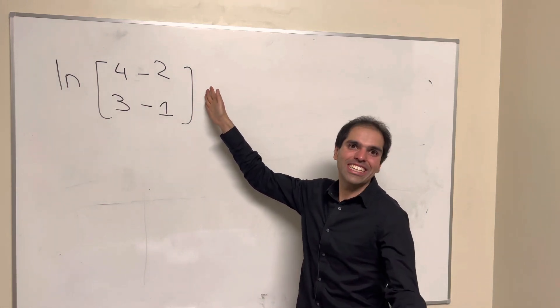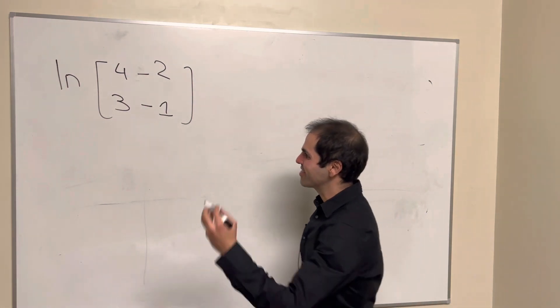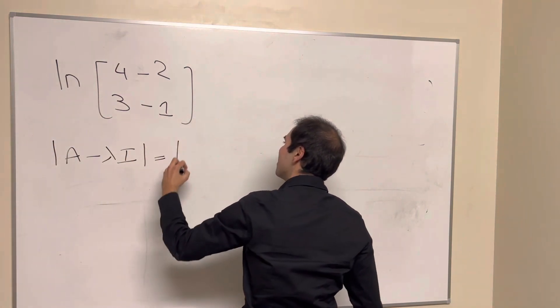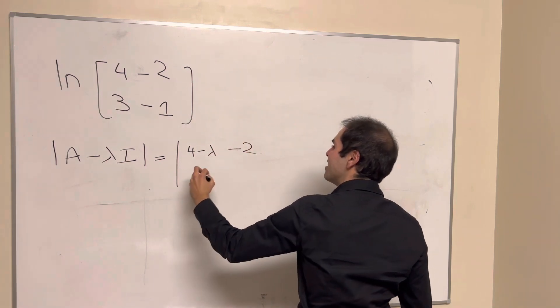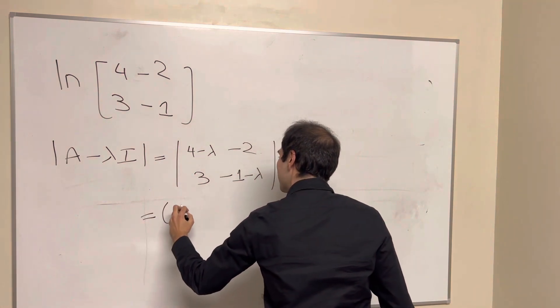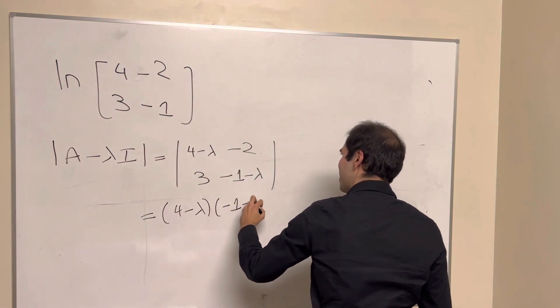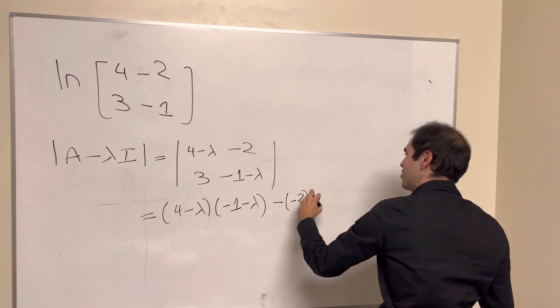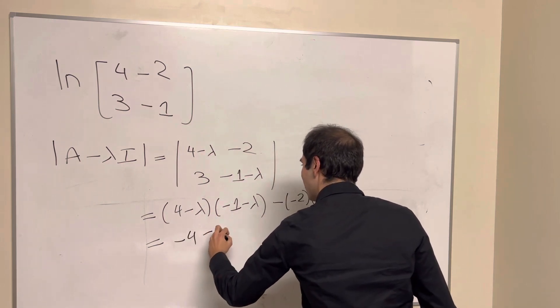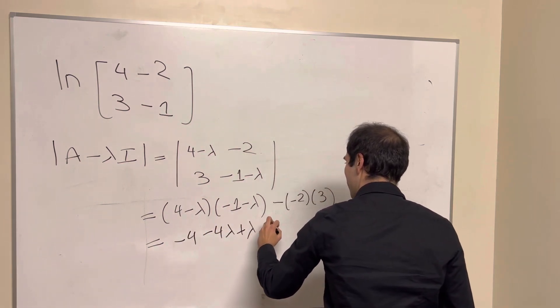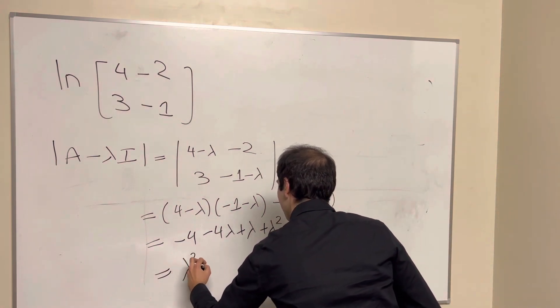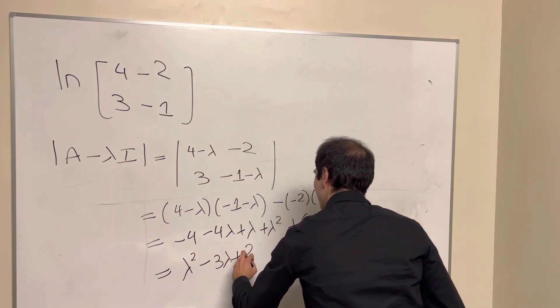And of course what you need to do is find the eigenvalues and eigenvectors. So let's calculate determinant of A minus lambda I, that is 4 minus lambda minus 2, 3 minus 1 minus lambda, and that is 4 minus lambda times minus 1 minus lambda, then minus minus 2 times 3, so minus 4 minus 4 lambda plus lambda plus lambda squared, and then plus 6, which finally gives us lambda squared minus 3 lambda plus 2.